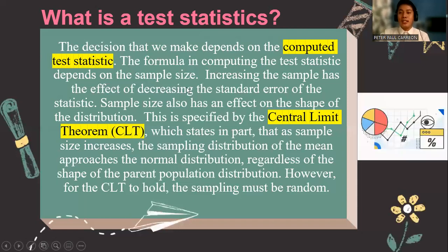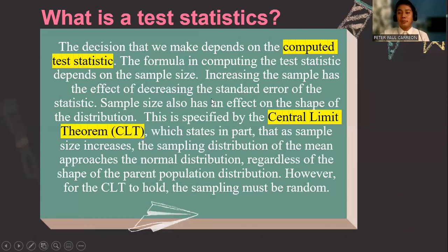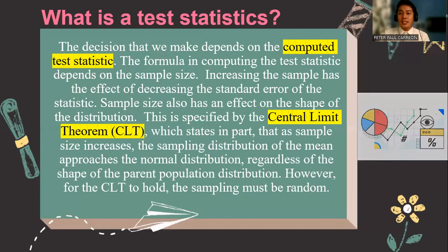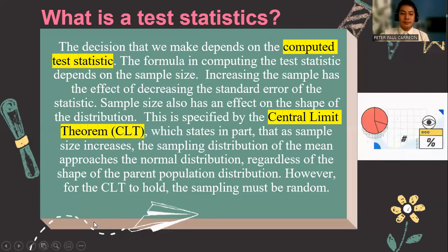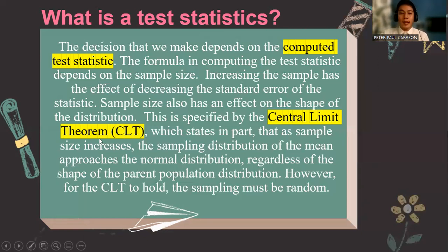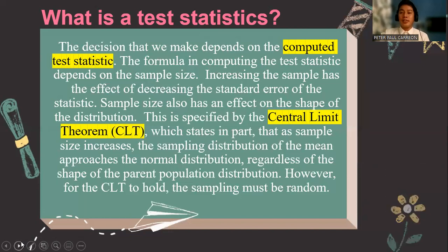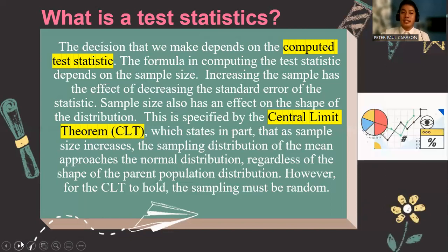An N greater than 30 would mean a large sample, meaning we use a Z test. But if the sample size N is less than 30, then that is a small sample test, in which the sample size is very small. So we will be using the T test.